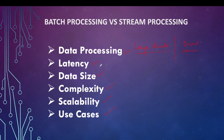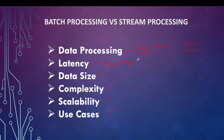For latency, batch processing systems will typically have latency in the range of minutes, hours, or even days — that's how long it takes to process large chunks of data. In real-time or stream processing, the latency will be milliseconds or seconds, which is why it is considered real-time or near real-time.